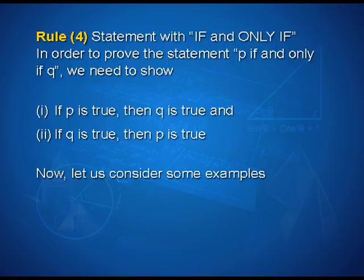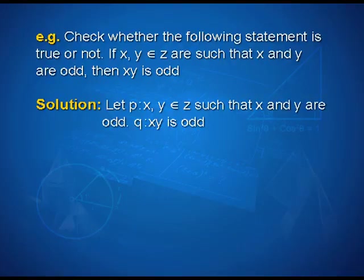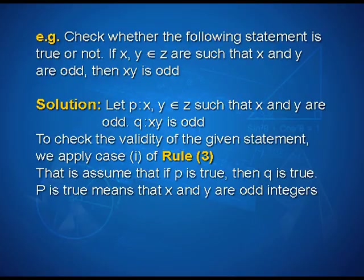Now let us consider some examples to understand these. Check whether the following statement is true or not: if x, y belong to Z are such that x and y are odd, then x·y is odd. Look into the solution. Let p: x, y belong to Z such that x and y are odd; q: x·y is odd. To check the validity of the given statement, we apply Case 1 of Rule 3 — that is, assume that if p is true, then q is true.